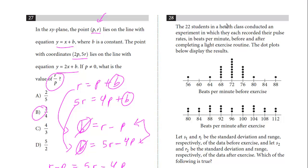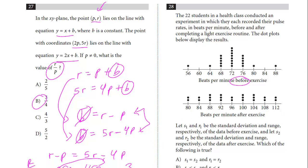The 22 students in a health class conduct an experiment in which they each recorded their pulse rates in beats per minute before and after completing a light exercise routine. The dot plots below display the results. So we have beats per minute before the exercise, beats per minute after.